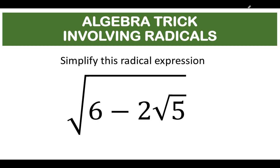Here's the problem. Simplify this radical expression, the square root of 6 minus 2 square root of 5.